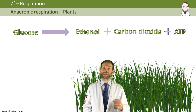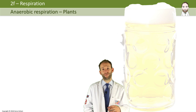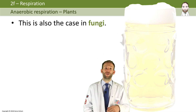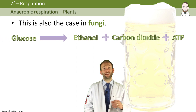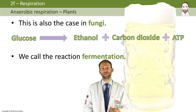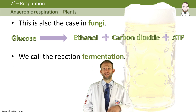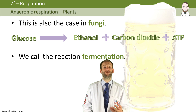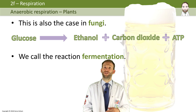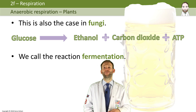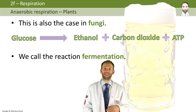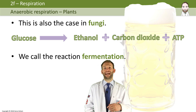Now actually, fungi do exactly the same type of anaerobic respiration. You are going to come across this reaction later on in the course when you study microorganisms. Because yeast, a single-celled type of fungi, can do this reaction — we call it fermentation — to release CO2 and ethanol. That CO2 and ethanol can be used by humans in food manufacture: the CO2 is used to make bread rise, and the ethanol is used when brewing alcohol. So anaerobic respiration in yeast is the same equation as the anaerobic respiration in plants.